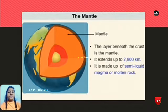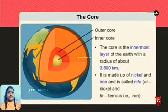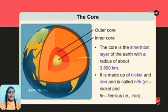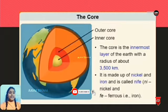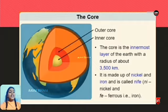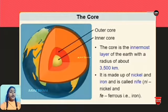Next, the core. The core has two types: outer core and inner core. The core is the innermost layer of the earth with a radius of about 3,500 kilometers. It is made up of nickel and iron and is called nife - N-I for nickel and F-E for ferrous, meaning iron.